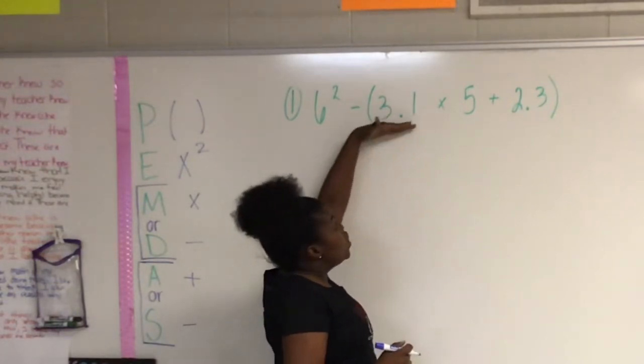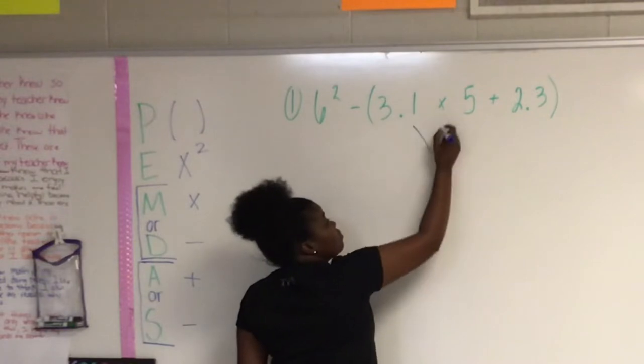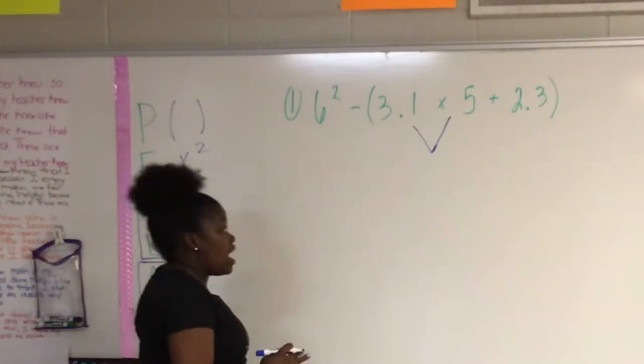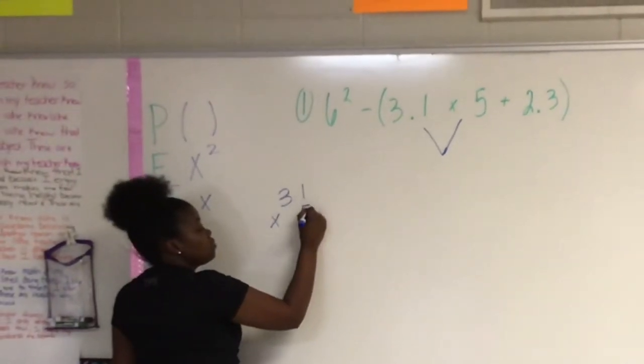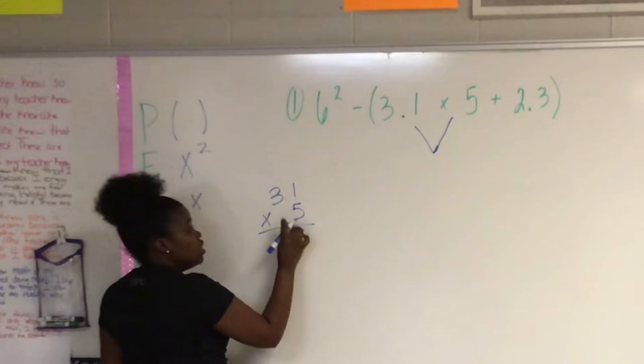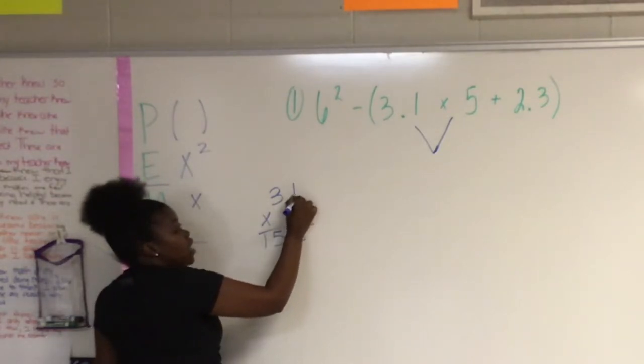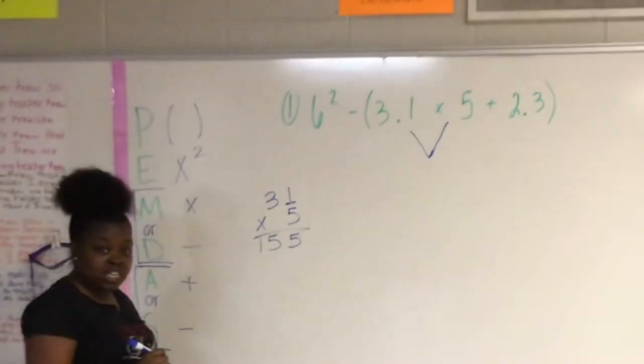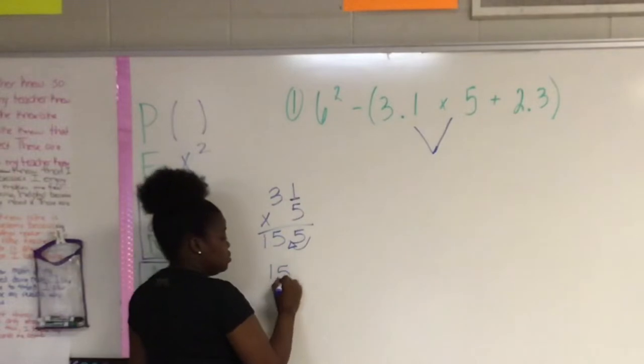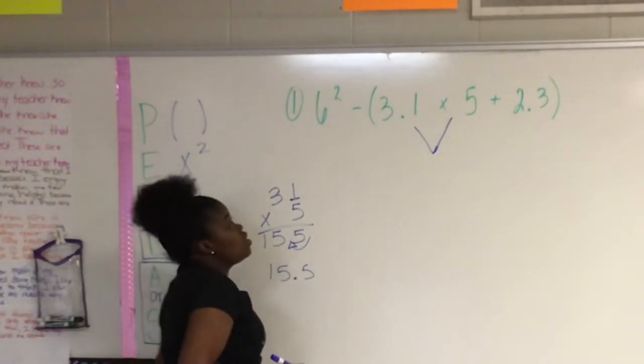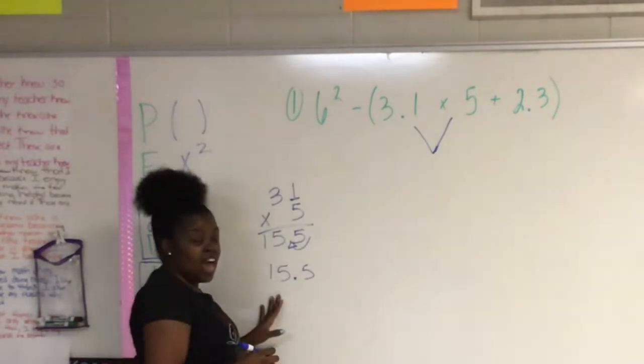The first thing we're going to solve is 3 and 1 tenths times 5. I'm going to go to the side to show my scratch work. 1 times 5 is 5. 5 times 3 is 15. I have one number behind my decimal. So 3 and 1 tenths times 5 equals 15 and 5 tenths.